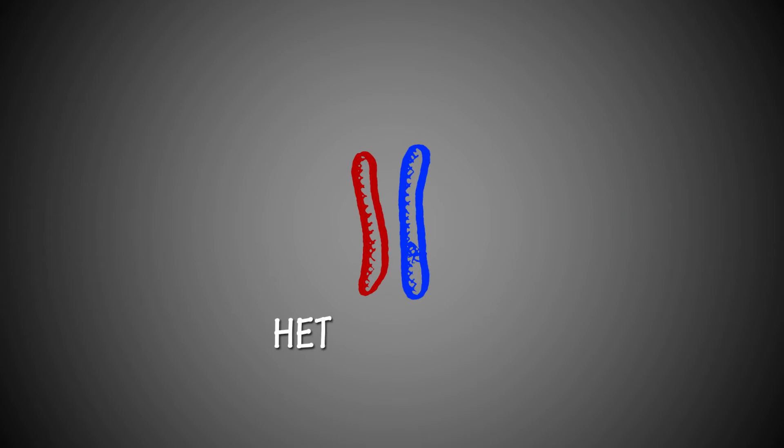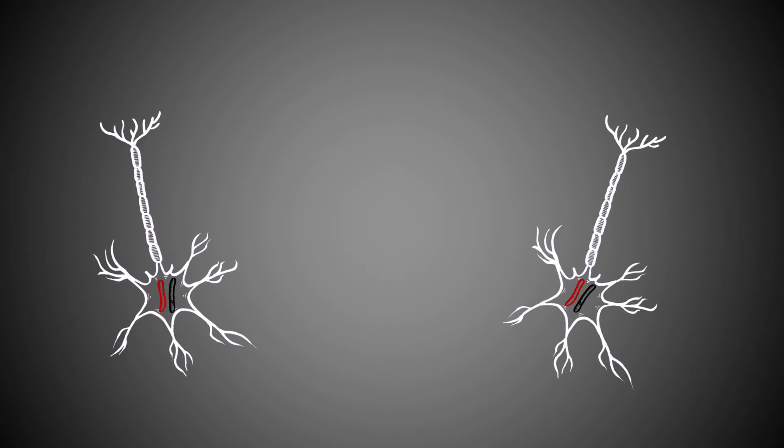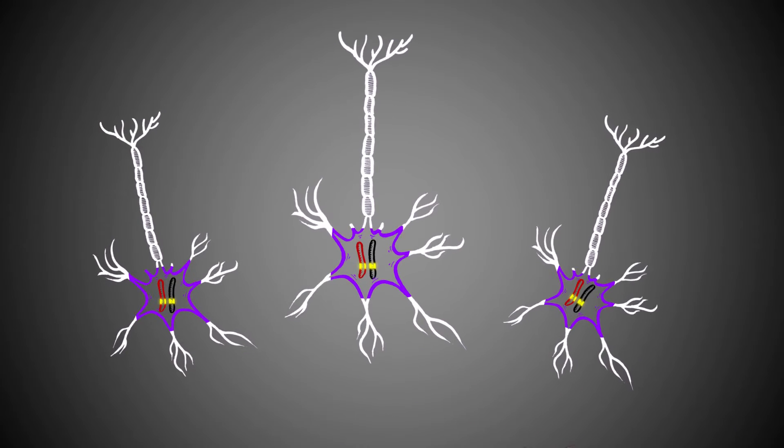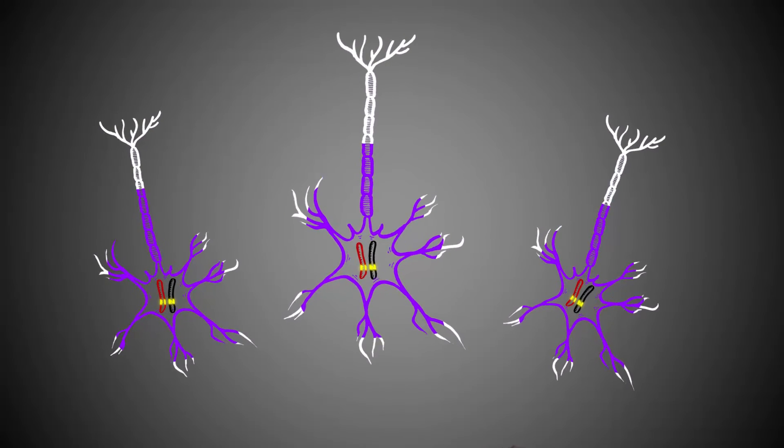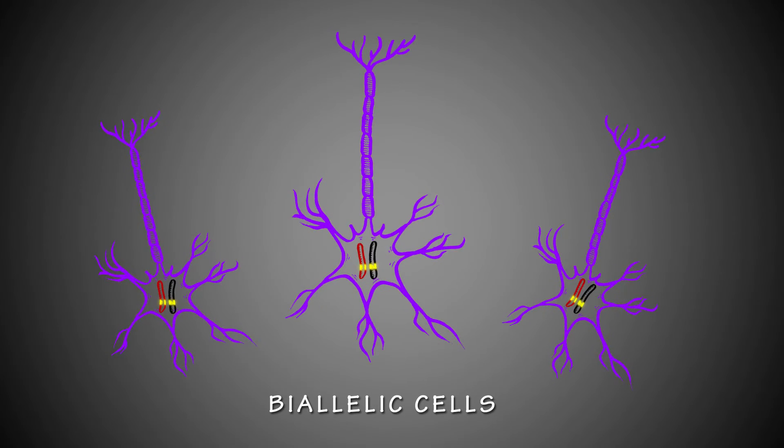Mutations that cause mental illness are often heterozygous, meaning that only one allele is mutated. Our data show that when a heterozygous mutation occurs, some brain cells will express both the mutated and healthy copies of the gene, like we previously thought. These are biallelic cells.